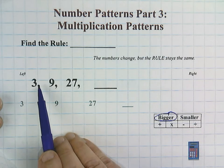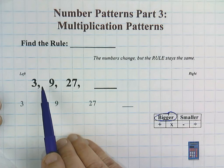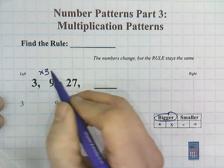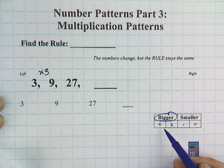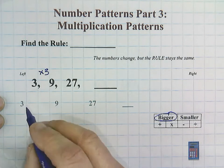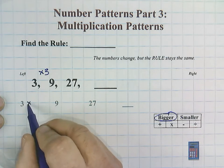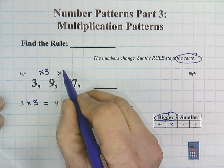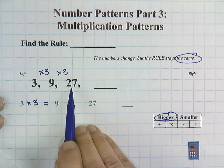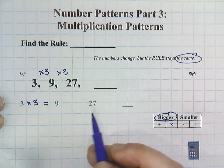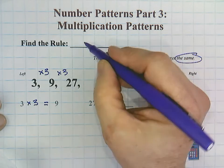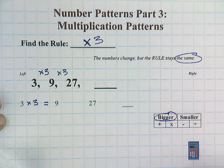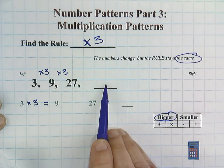I just know from my knowledge of multiplication that 3 times 3 would equal 9. So I'm going to try times 3, since I know those facts. So this would read as 3 times 3 equals 9. The rule has to stay the same. So let's see if 9 times 3 equals 27. And yes, 9 times 3 equals 27. So we definitely have a times 3 rule, and our job is to figure out what comes next.